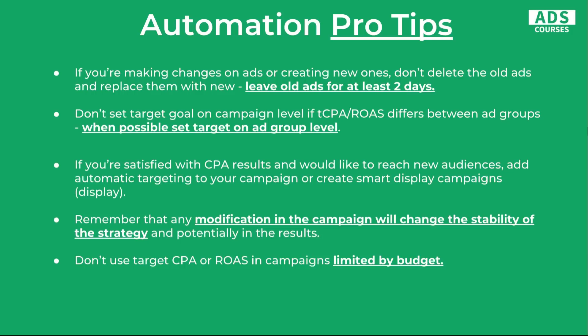Now that you know how each strategy works and when to use them, here are some pro tips and common mistakes when setting up and optimizing automatic campaigns. First, if you're making changes to ads or creating new ones, don't delete the old ads and replace them. Just leave the old ads for at least two days. With automatic bidding, the system is able to modify bids at the ad level — something you can't do with manual bidding. With automatic bidding, the system can actually increase or decrease bids on certain ad texts. So if you just replace your ads, you will lose historical data.